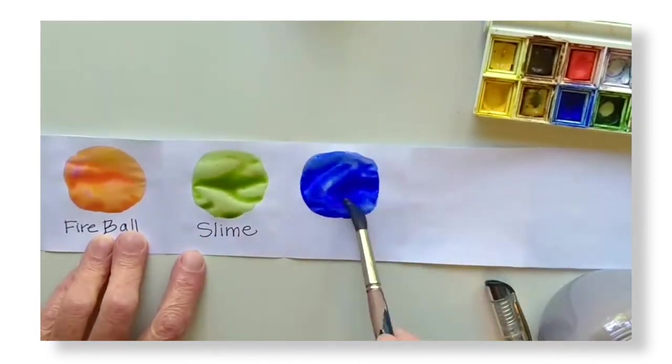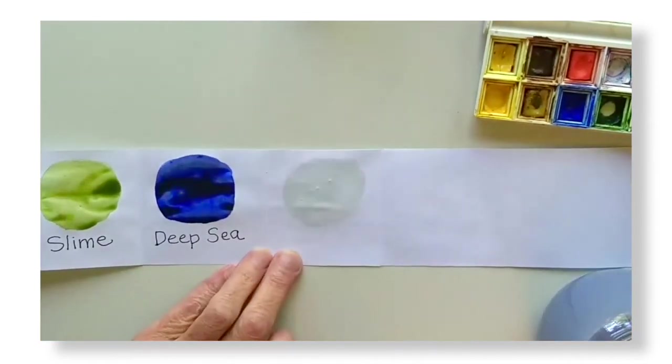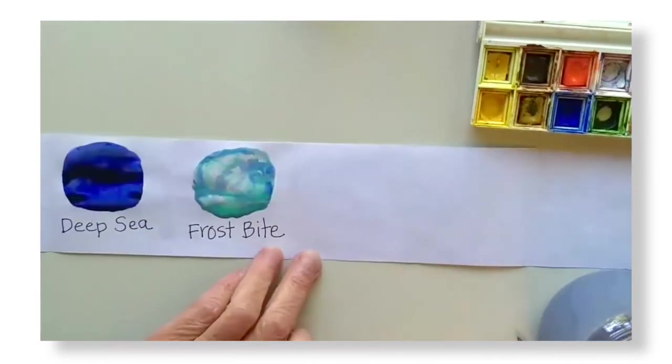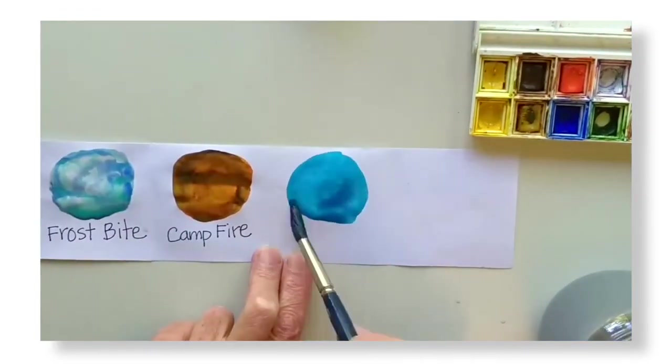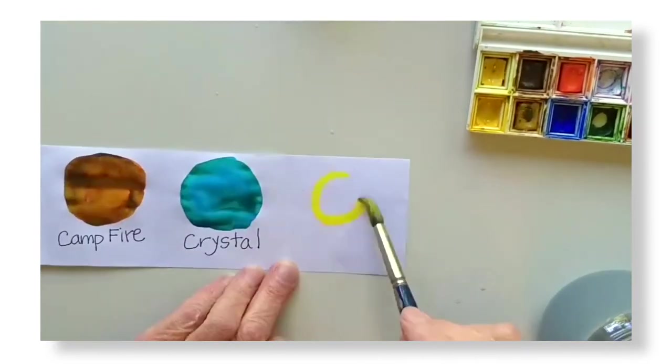After you've made your first color, move on and make colors for all the rest of your pages. I named my colors Fireball, Slime, Deep Sea, Frostbite, Campfire, Crystal and Orbit.